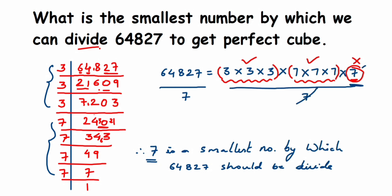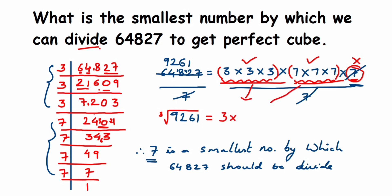Dividing 64827 by 7: seven nines are 63, remainder 1; seven twos are 14, remainder 4; six times 7 is 42; seven ones are 7 — giving us 9261. So 9261 is the perfect cube. The cube root is simple: from the factorization we have a set of three 3s and a set of three 7s. Take one factor from each set: 3 × 7 = 21. So the cube root of 9261 is 21.